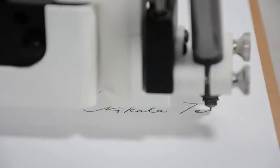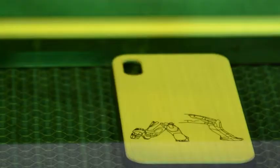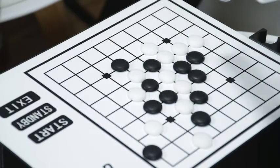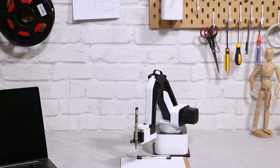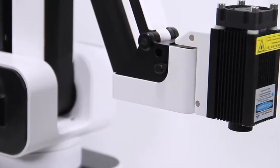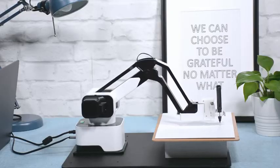Imagine having Iron Man's Jarvis on your desktop that writes your letters, draws your pictures, laser engraves your phone case, and plays chess with you. Today, it all becomes possible with Hexbot, the first versatile all-in-one desktop robotic arm that turns your desktop into a workshop.